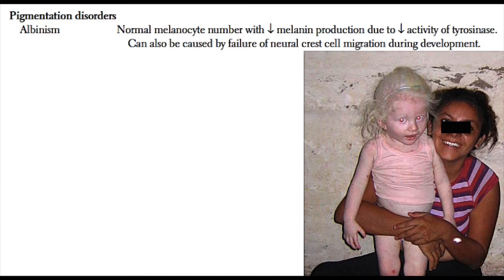The other way albinism can happen is if there's a failure of neural crest cell migration during embryologic development. Melanocytes are derived from neural crest cells, so failure of these cells to migrate to the skin, for example, will result in albinism.